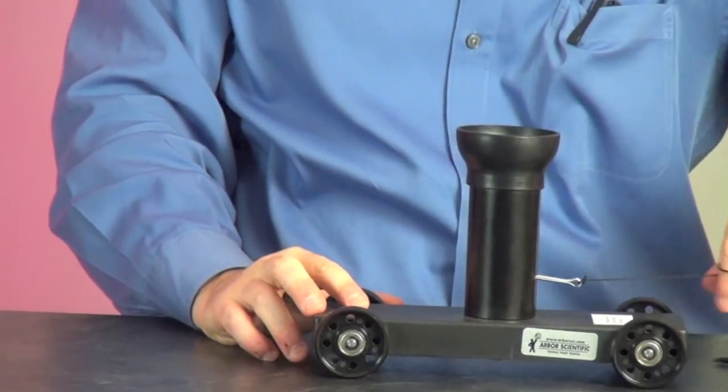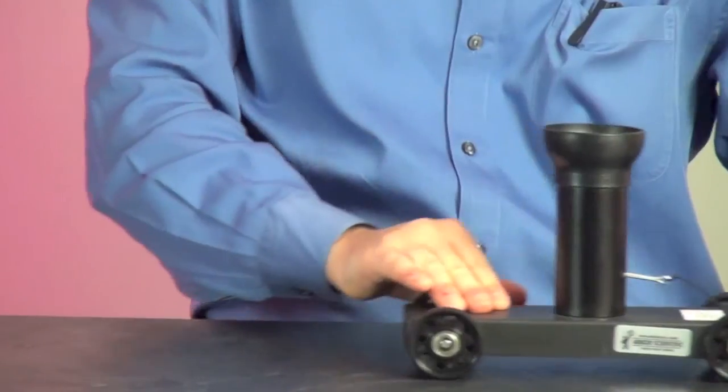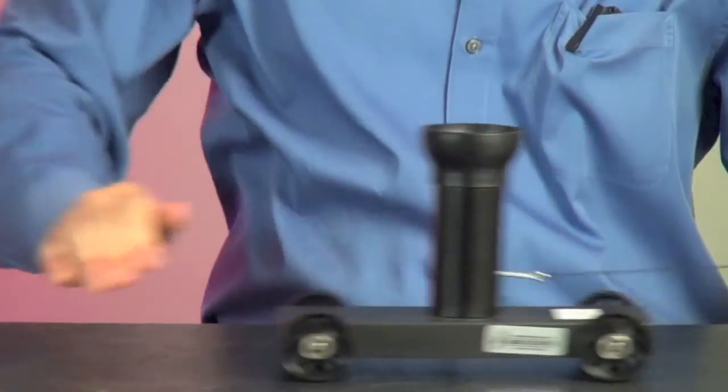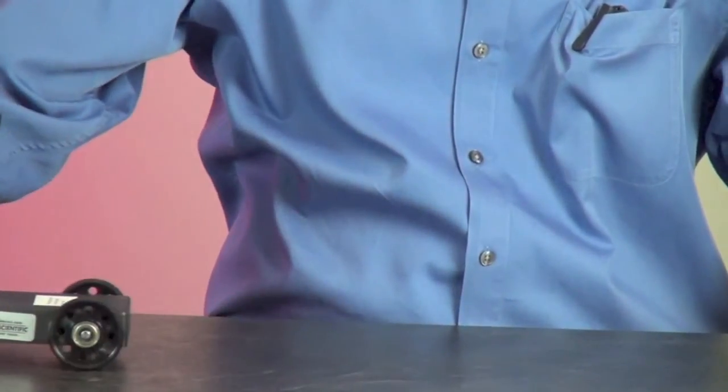Grasp the cord connected to the locking pin with one hand and push the car with the other. Once the car has left your hand, jerk the locking pin out of its hole.